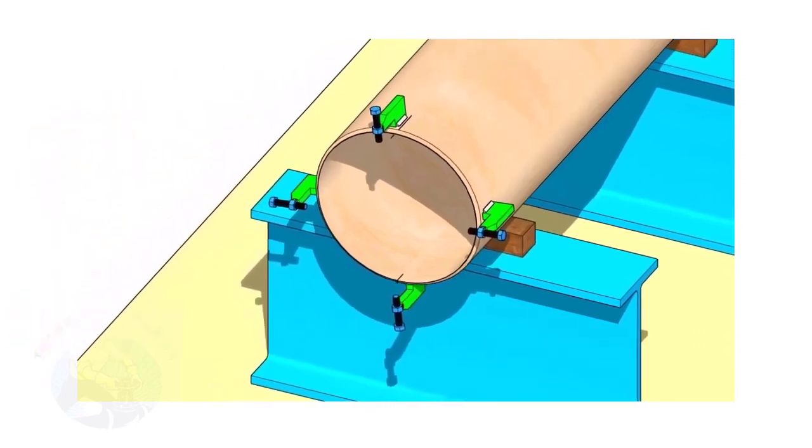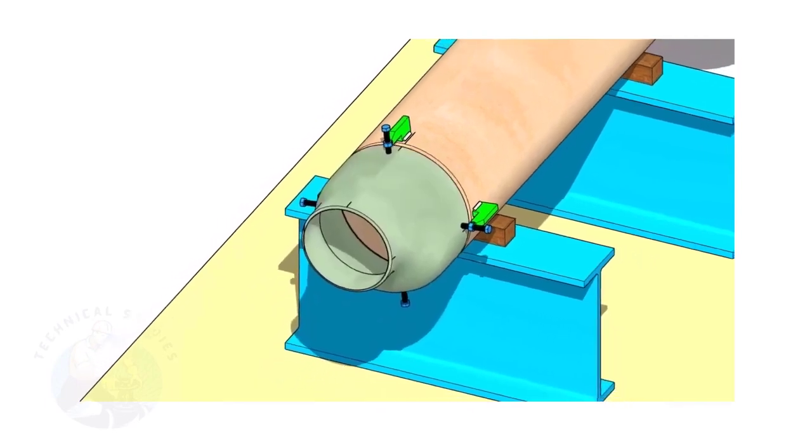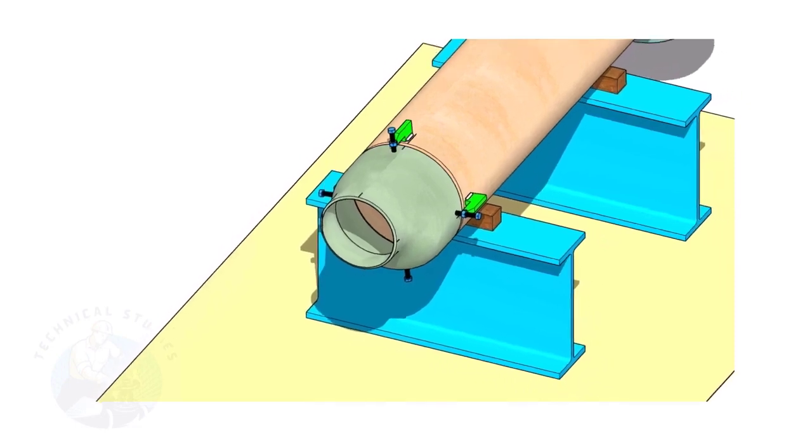If you don't have a pipe aligning clamp, tack weld four number jack bolts 90 degrees apart, as shown. Put the reducer in the clamps. Slightly tighten the bolts.